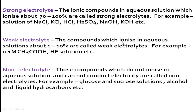Weak electrolytes: the compounds which ionize in aqueous solution in a very small amount — that is, one to ten percent — are called weak electrolytes. For example, 0.1 molar acetic acid: acetic acid is an organic acid, and all organic acids are weak because they ionize in very small amounts. Only one to ten percent ionizes into acetate ion and hydrogen ion, and the remaining ninety percent stays as acetic acid. For this reason, they are weak electrolytes and cannot conduct electricity well.